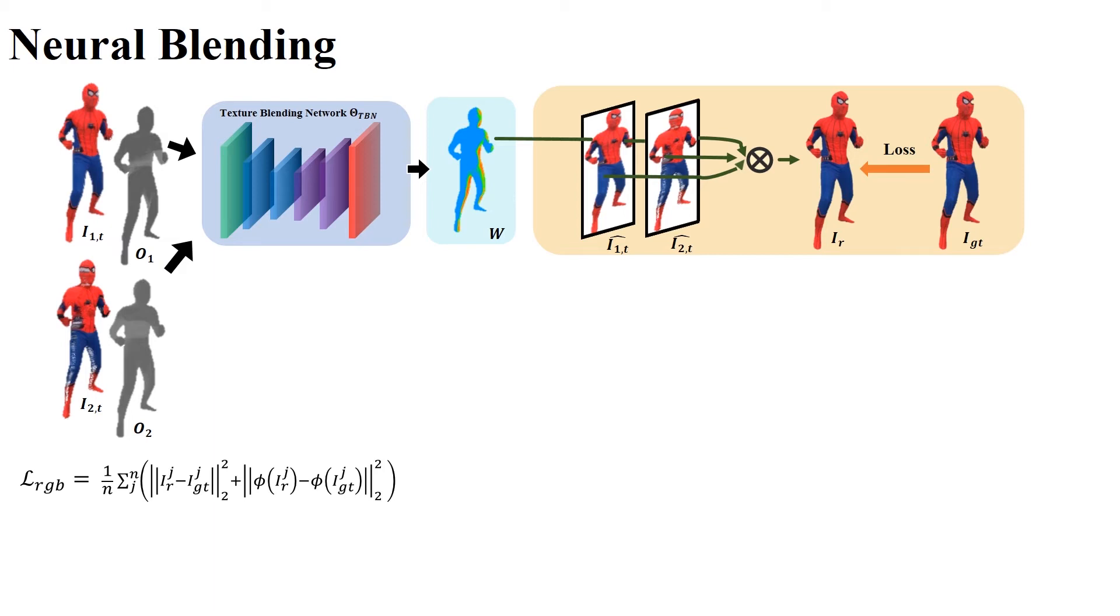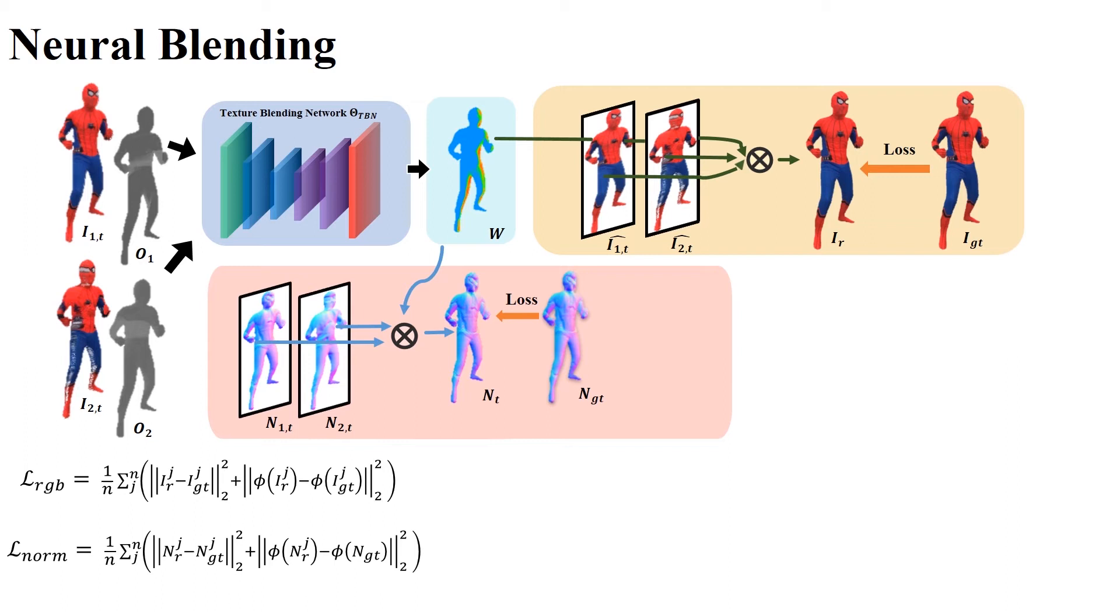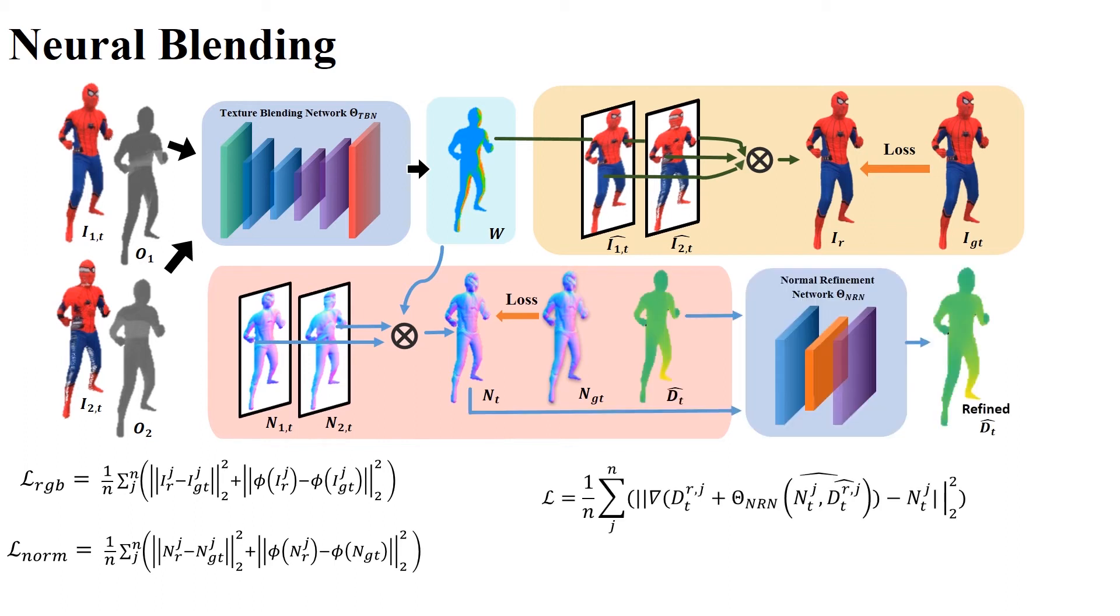But the warped images have lost the occlusion information. So we compute the occlusion maps for the warped images and send this information to the blending network to predict the blending map. The blending map can be up-sampled directly and blend the high-resolution warped images to achieve high-resolution photorealistic texture.